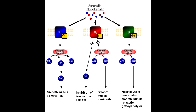Beta-1 receptors are of the GS class. The effects of beta-1 receptor stimulation are to increase heart rate, increase contractility, increase renin release, and increase lipolysis.